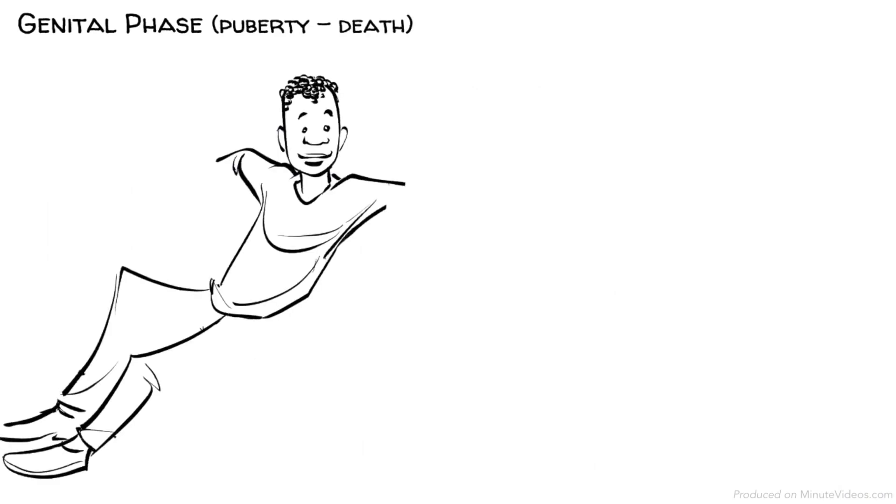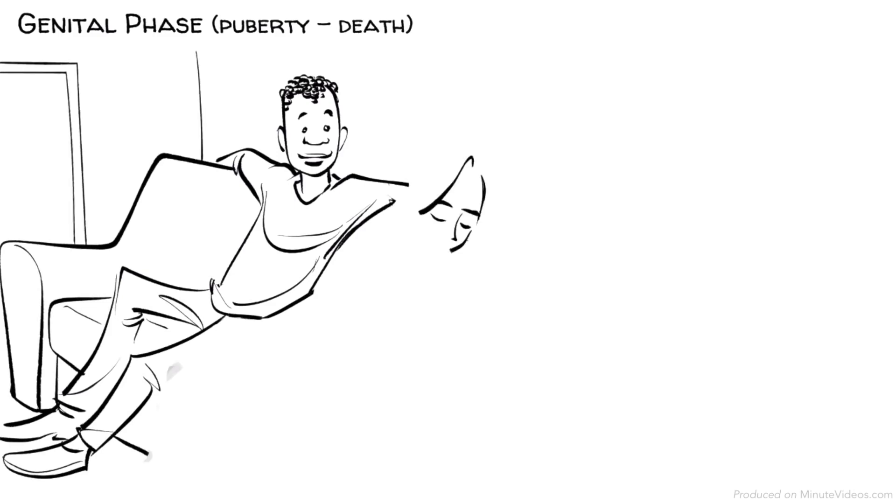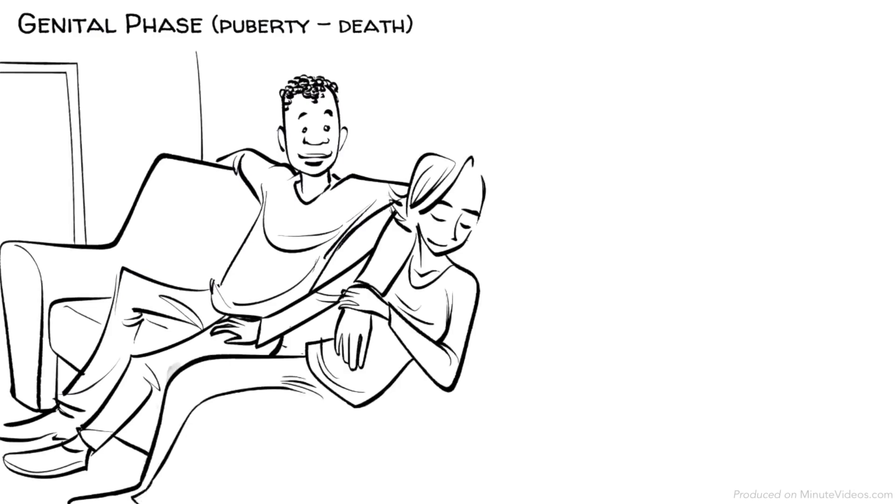The genital phase, puberty to death. Once we reach puberty, our libido starts to become active again and we develop an interest in sexual partners.